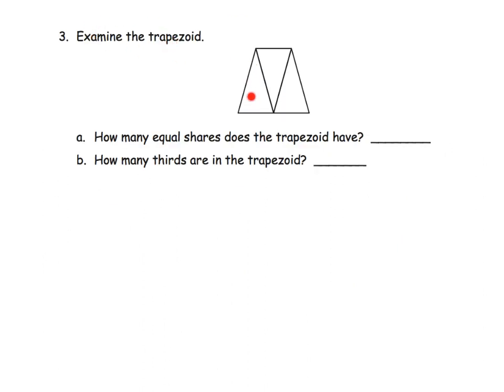Examine the trapezoid. We've got that trapezoid. It says, how many equal shares does the trapezoid have? We can see that this trapezoid has been cut into three equal-sized pieces. So those are thirds. And how many thirds are in the trapezoid? The answer is three.